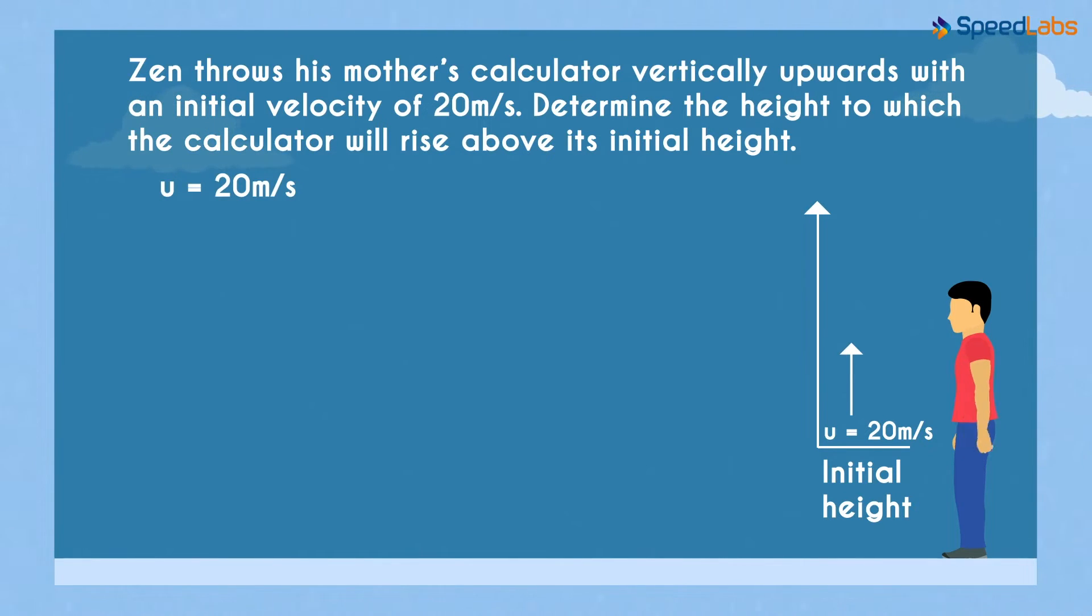After Zen throws the calculator up, it will reach a certain height and fall back towards the ground, and that's because of the gravitational pull of the earth. When the calculator is at the top just about to fall down, its velocity will be zero. So the final velocity v will be zero.